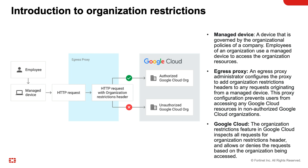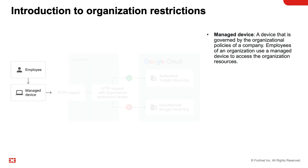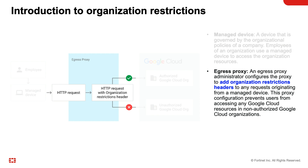The diagram illustrates how different components work to enforce organization restrictions. The architectural diagram shows a managed device, an egress proxy, and Google Cloud. A managed device is a device governed by the organization policies of a company, and employees use it to access organization resources. The egress proxy adds organization restriction headers to any requests originating from the managed device, preventing users from accessing Google Cloud resources in non-authorized organizations.